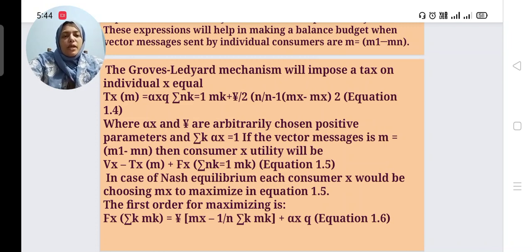If the vector message is m = (m1,...,mn), then consumer x utility will be v(x) - tx(m) + f(x)[Σ(k=1 to n)mk], considered as equation 1.5. In case of Nash equilibrium, each consumer x would be choosing mx to maximize equation 1.5.